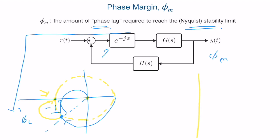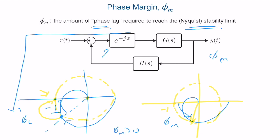To compute the phase margin graphically: draw a polar plot, draw a unit circle, find where the polar plot crosses the unit circle, and look at the angle of that crossing point with respect to the negative real axis. This angle is the phase margin. If the phase margin is positive, the system is stable; if negative, the system is unstable.